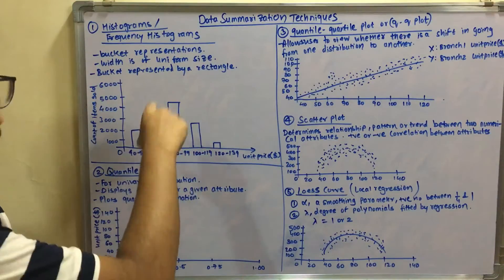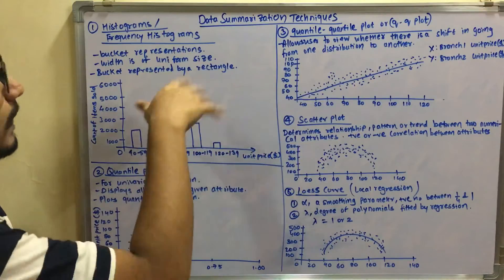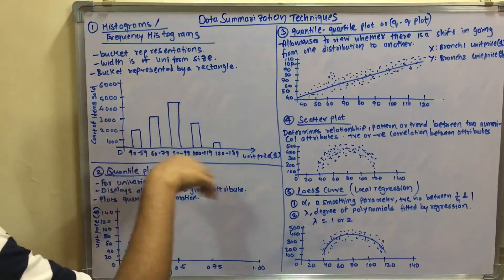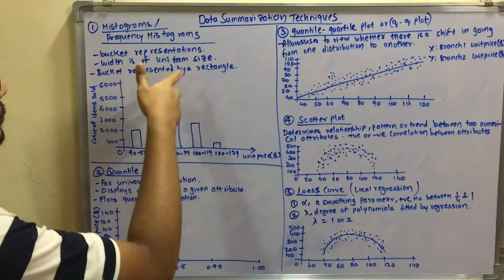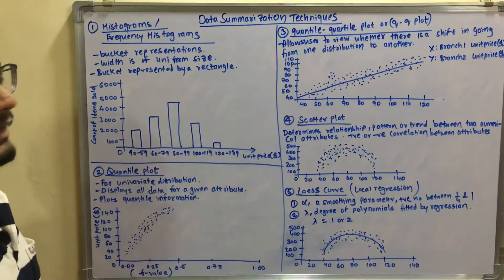And the bucket is represented by a rectangle, like you have a bar graph. So bar graph and histogram are more like the same. So this is how a bar graph or a histogram in data mining looks. It's basically a frequency histogram.